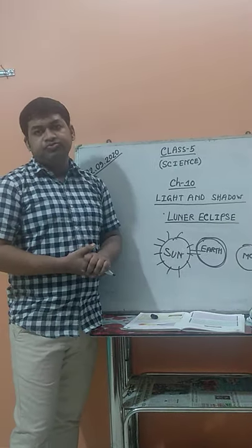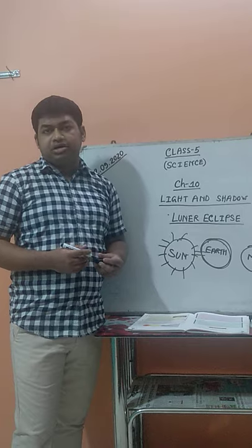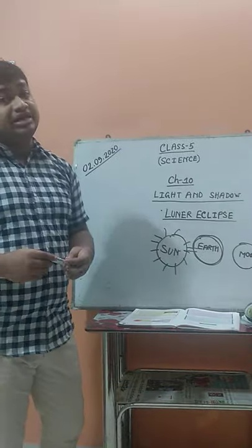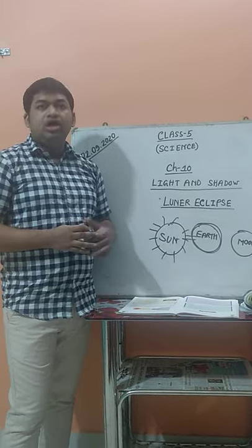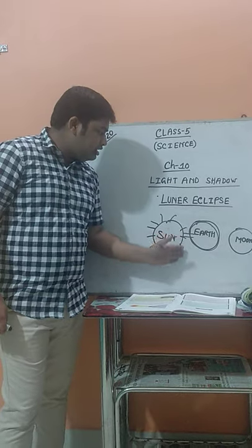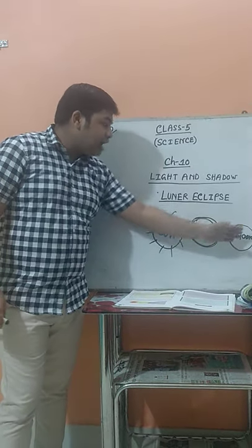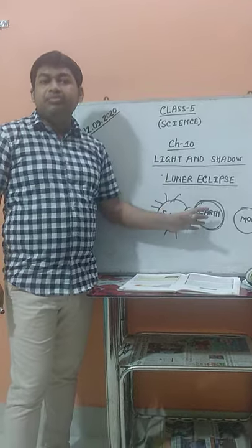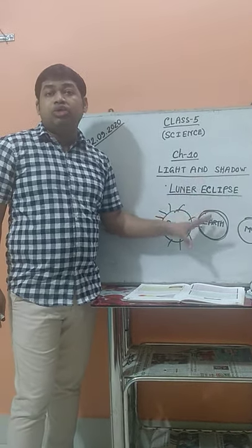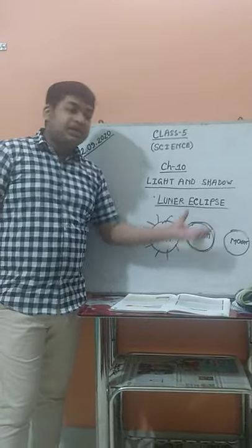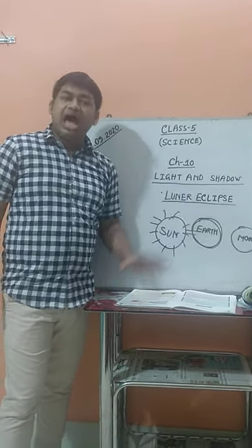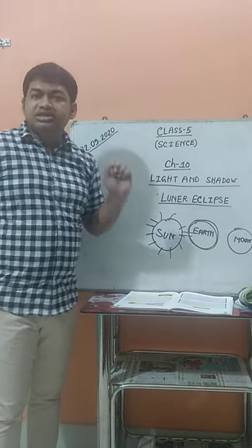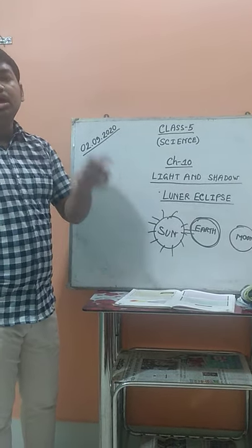The lunar eclipse is also divided into two parts. The first one is the total lunar eclipse and the second one is the partial lunar eclipse. What is the total lunar eclipse? When the sun, earth, and moon come in a straight line, the earth does not allow even a little amount of sunlight to fall over the moon's surface — it totally obstructs and absorbs the sunlight and does not allow it to reach the moon's surface. This phenomenon is known as the total lunar eclipse.